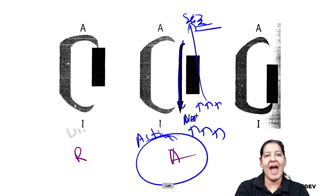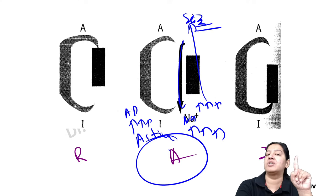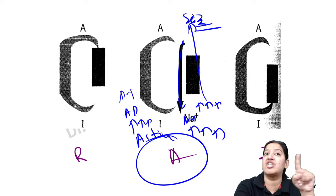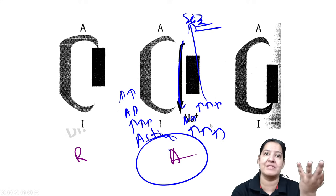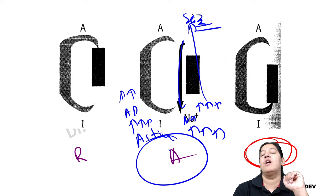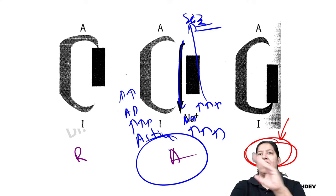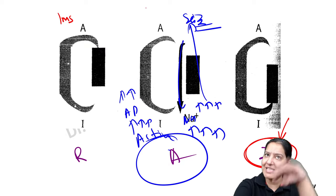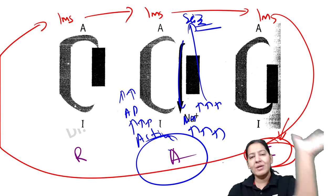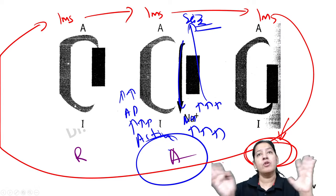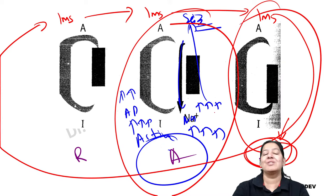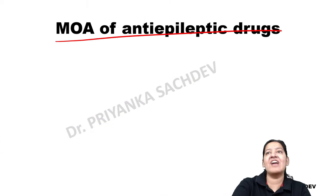Seizures occur because of excessive action potentials during the active stage — too much sodium enters and neurons fire excessively. The drug holds the sodium channel in the inactive stage for longer. Normally inactive lasted one millisecond; now with the drug it lasts one hundred milliseconds. So the neuron is delayed in returning to resting and then active — the delay controls the seizure. Seizures are controlled by this prolongation.